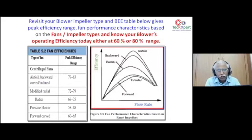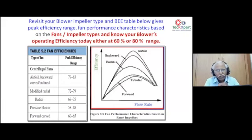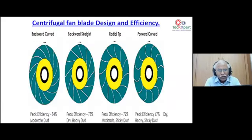Fans and impellers, per the BIS table, range from 60–80% efficiency. The key difference from motors — which have a flat efficiency curve of 50–90% across a wide range — is that blowers, especially backward-curved and airfoil types, have a very narrow efficiency band with respect to flow rate. We must match the static pressure of the system resistance to the system curve of the given blower to operate at the best efficiency point.